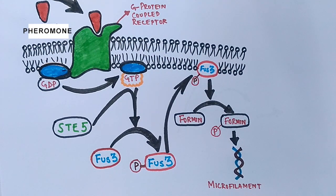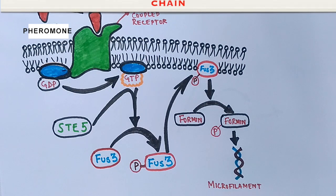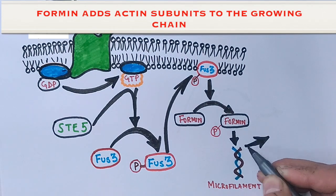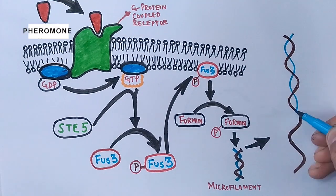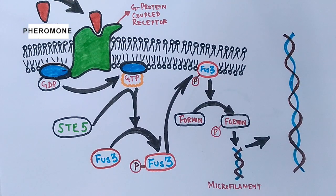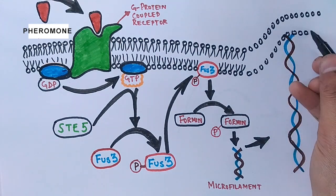So now what this formin will do is that it will act on microfilaments, where it drives the polymerization of microfilaments. Finally, the yeast cell grows a long microfilament, and with the growth of the microfilament, the cell forms the shmoo projections like this.